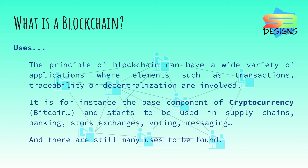The principle of blockchain can have a wide variety of applications where elements such as transactions, traceability, or decentralization are involved. It is, for instance, the base component of cryptocurrency, such as Bitcoin, and starts to be used in supply chains, banking, stock exchanges, voting, and messaging. And there are still many uses to be found.